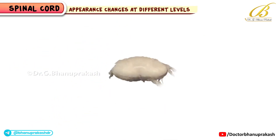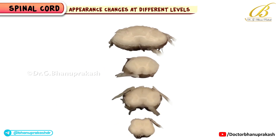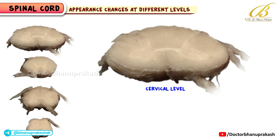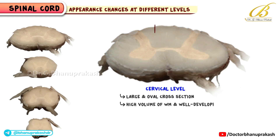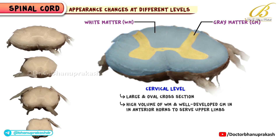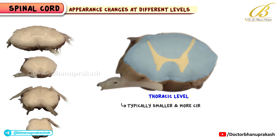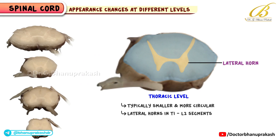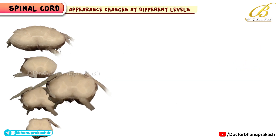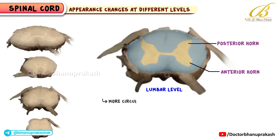Finally, let's look at how the spinal cord's appearance changes at different levels. At the cervical level, there is a large and somewhat oval cross-section with a high volume of white matter and well-developed gray matter in the anterior horns to serve the upper limbs. At the thoracic level, it is typically smaller and more circular, with lateral horns in T1 to L2 segments and relatively slender anterior and posterior horns.